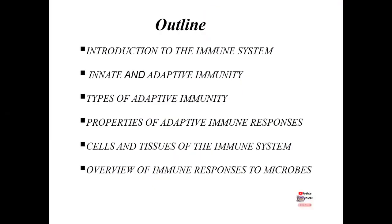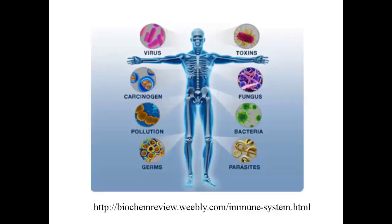The outline of today's lecture includes: introduction to the immune system, innate and adaptive immunity, types of adaptive immunity, properties of adaptive immune responses, cells and tissues of the immune system. Once we finish the detail about the immune system, at the end we will give a brief summary of the entire lecture.